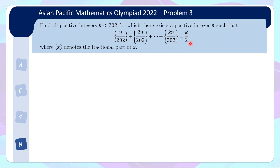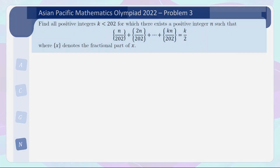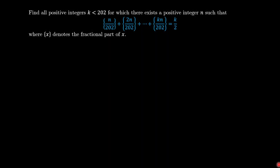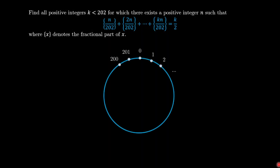So this looks a bit like a handful. Let us first take a while to digest what this means pictorially — this is actually quite helpful. Let's say we have a circle divided into 202 equal parts, and let us start off with the fraction n over 202, which is represented by the red segment.